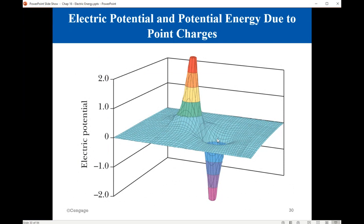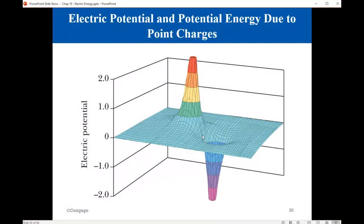In three dimensions, this is how the electric potential looks. When you have a positive charge, the potential goes up, and for a negative charge the potential goes down. This is an inverse dependence on R, where R is the distance from the source charge to the location where we are measuring the potential.